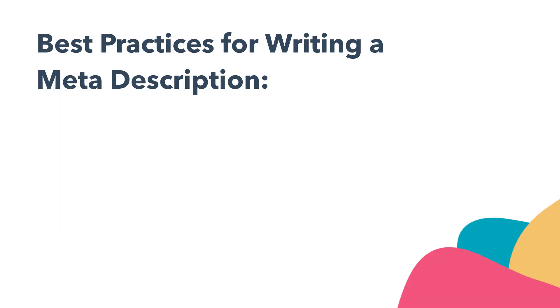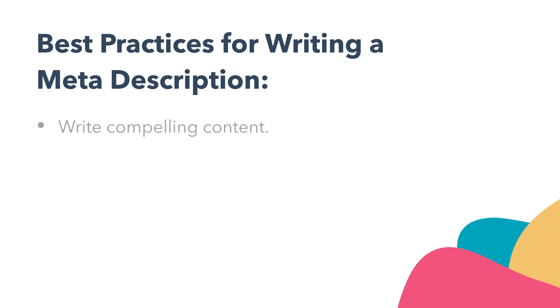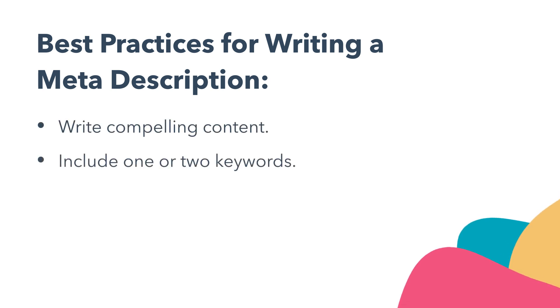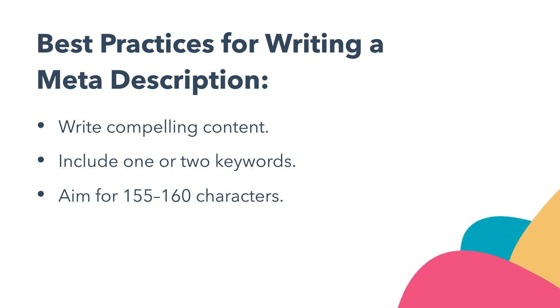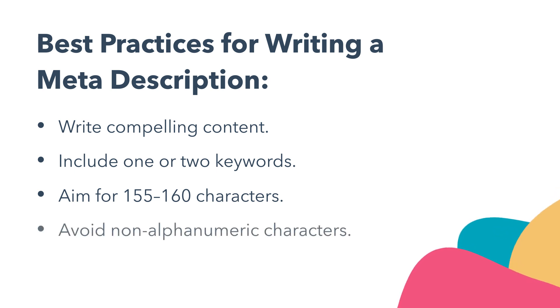Now that you know why you need a meta description, here's how to write an effective one. You're going to want to write compelling content, include one or two keywords, aim for 155 to 160 characters, and avoid non-alphanumeric characters.